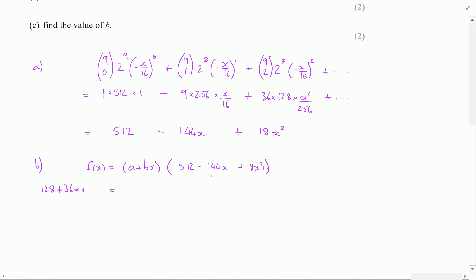So we've got 128 plus 36x plus some other bits is equal to, now I'm going to expand this and I'm going to do this on two lines. I'm going to write first of all the expansion by A. So that's going to be 512a minus 144 lots of ax plus 18ax squared.